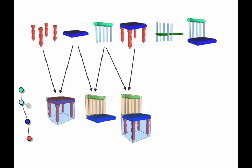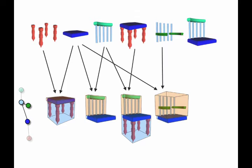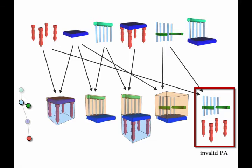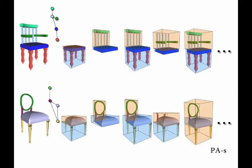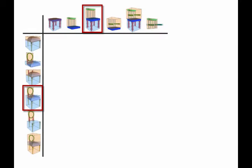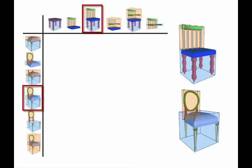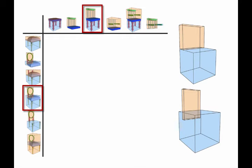Hence, we enumerate all possible combinations of part pairs to construct a space of PAs. For a pair of PAs, we compute their distance as the distance between descriptors, which encode the spatial configurations between their abstracted bounding boxes.